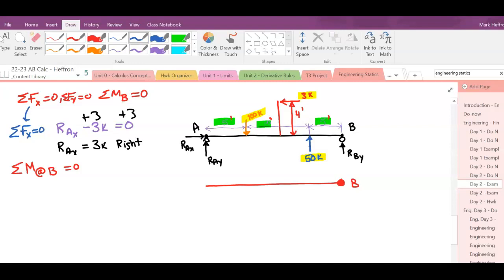And so that means when I have this 50 going up, it's going to cause rotation like that. When I have this 100 going down, it's going to cause counterclockwise rotation. So this would be positive. This would be negative. And this reaction, the way it's drawn, would be positive. But there's still this 3 kip force up here, and it's acting perpendicular to the beam.